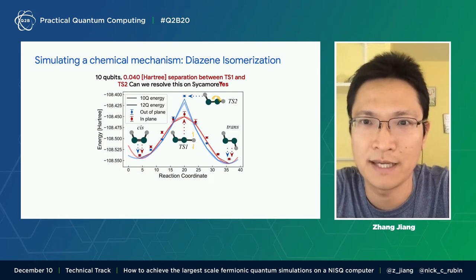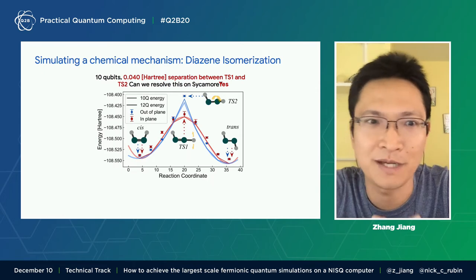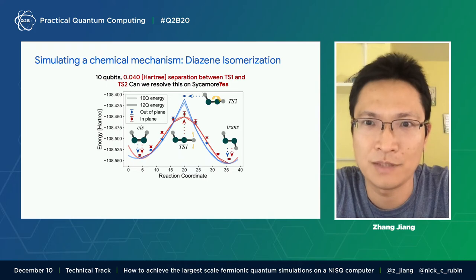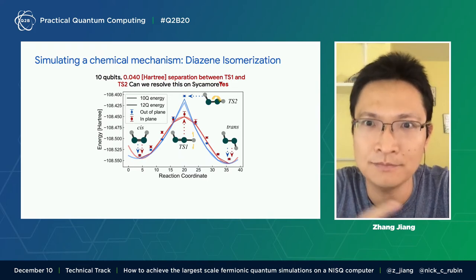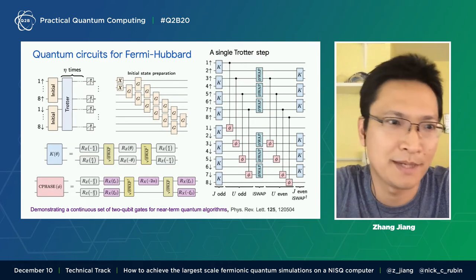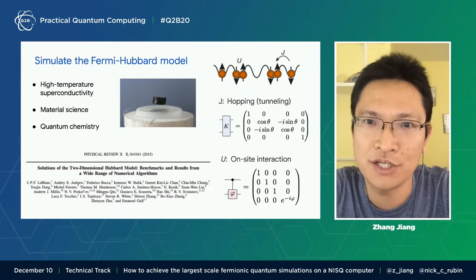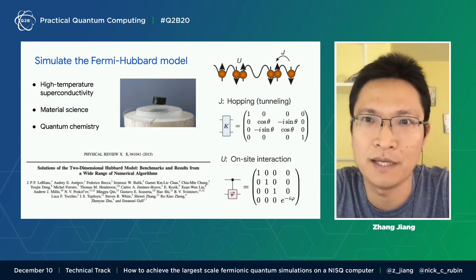It is really nice to see that we can get chemical accuracy on the quantum computer. So now I am going to talk about a quantum simulation of the Fermi-Hubbard model. The Fermi-Hubbard model is a standard model in condensed matter systems and in quantum chemistry. It analyzes the phenomenon of high-temperature superconductivity and is widely studied in material science and quantum chemistry.